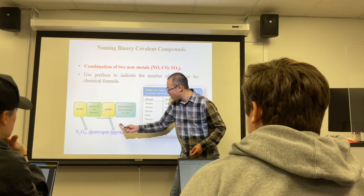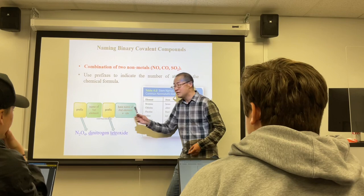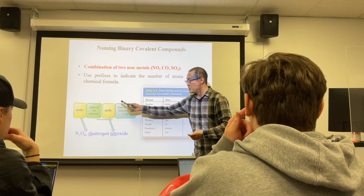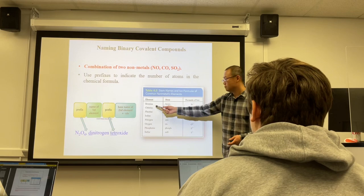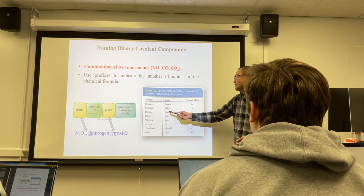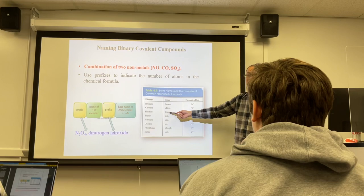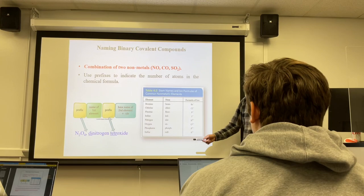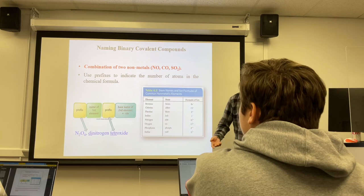Quick practice: which name is not correct? The answer is B. The correct name for P₂O₅ is diphosphorus pentoxide. When you search online, some websites give different names — in this class, always use the rules to name compounds, not a web search, because the web may give a different name than what we teach.